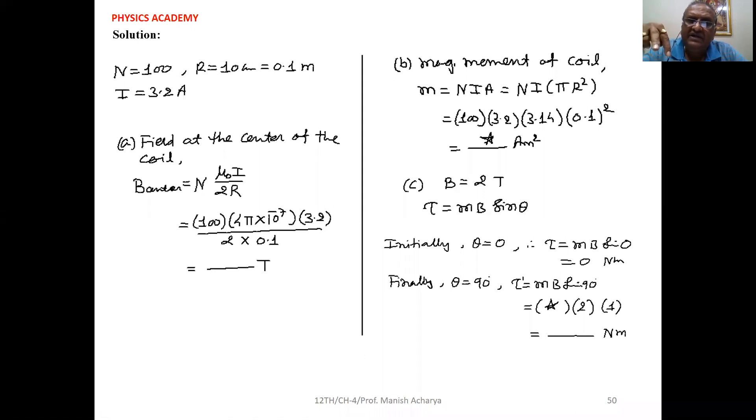Finally it is rotated by 90 degrees. So in final position, τ = MB sin 90. Substitute the value of M here which we calculated in question B. Then B is given to you, 2 tesla, sin 90 is 1. So finally the torque is this much.